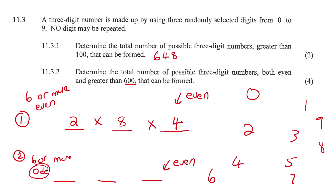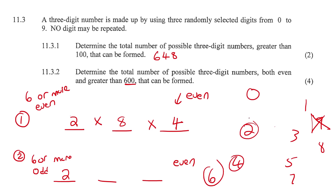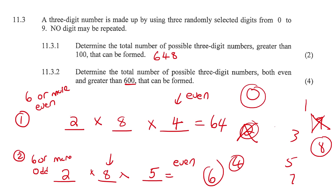For scenario two: the first digit must be six or larger but odd, so the only options are seven and nine - two options. Because the first digit is now odd, how many even numbers do we have available for the last position? Now we have five. For the middle position we have eight options. So scenario two: 2 × 5 × 8 = 80. To get the final answer, add the two scenarios: 64 + 80 = 144.